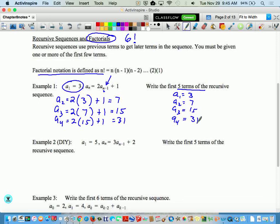And then our last one would be a sub 5. After this, we're done. So that's 31. So 2 times 31 is 62 plus 1 is 63. Those are your first 5 terms of this recursive equation.